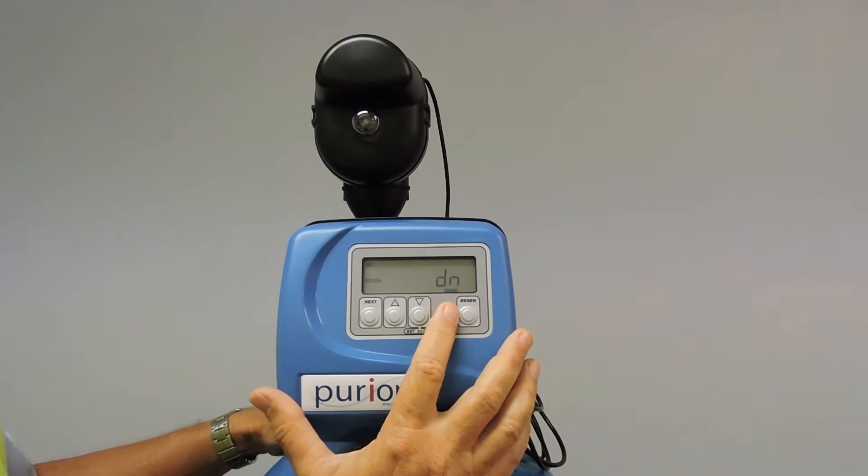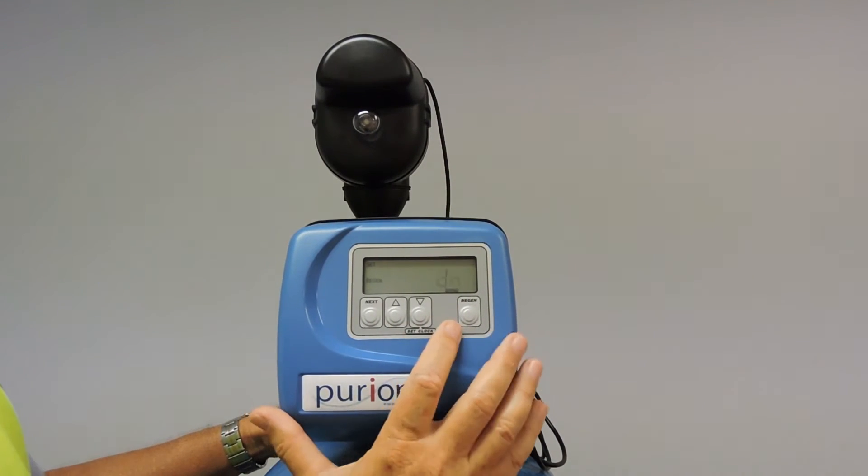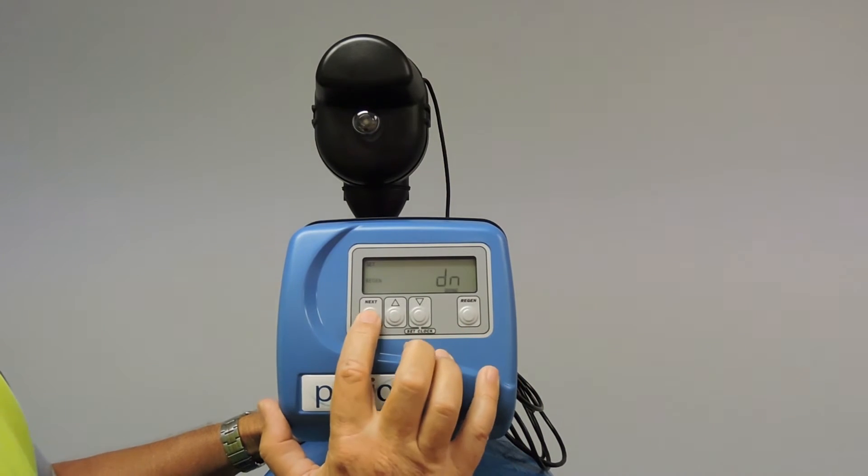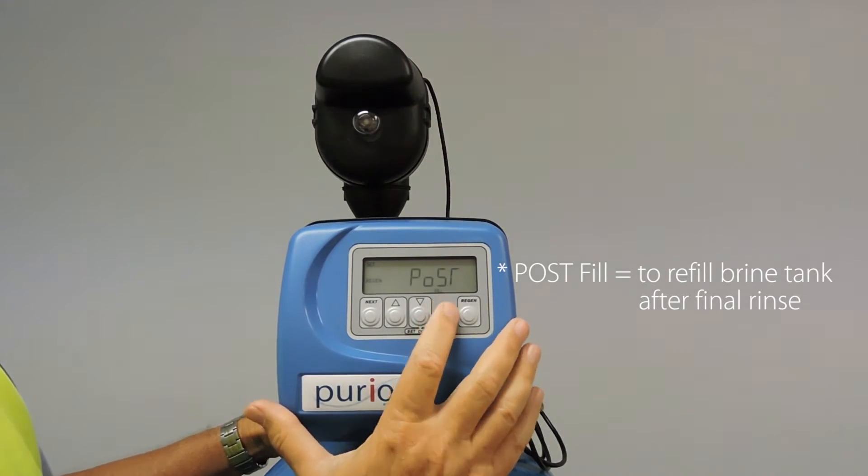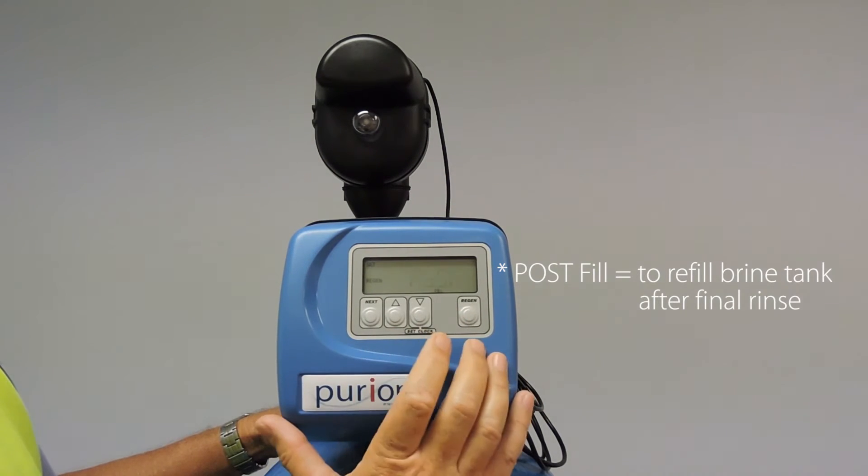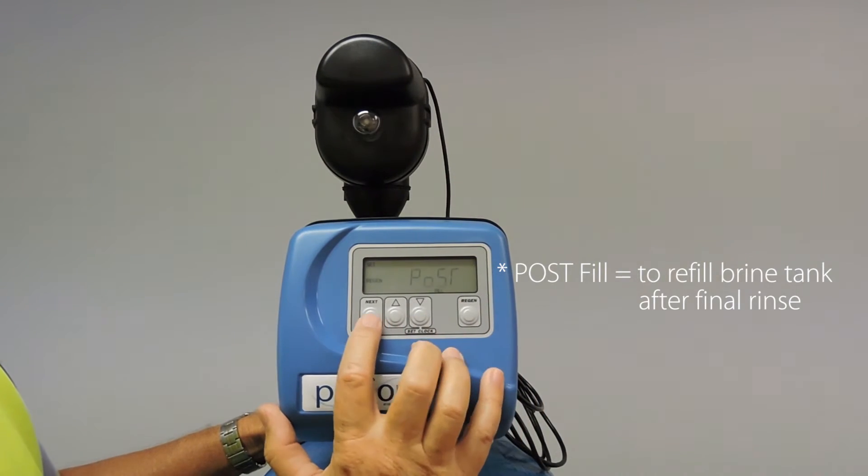This chooses the configuration valve being upflow or downflow. We bring them into the country using downflow. So we will accept that. Post fill is when we want to fill the regenerate tank at the end of the cycle. So we will accept that.